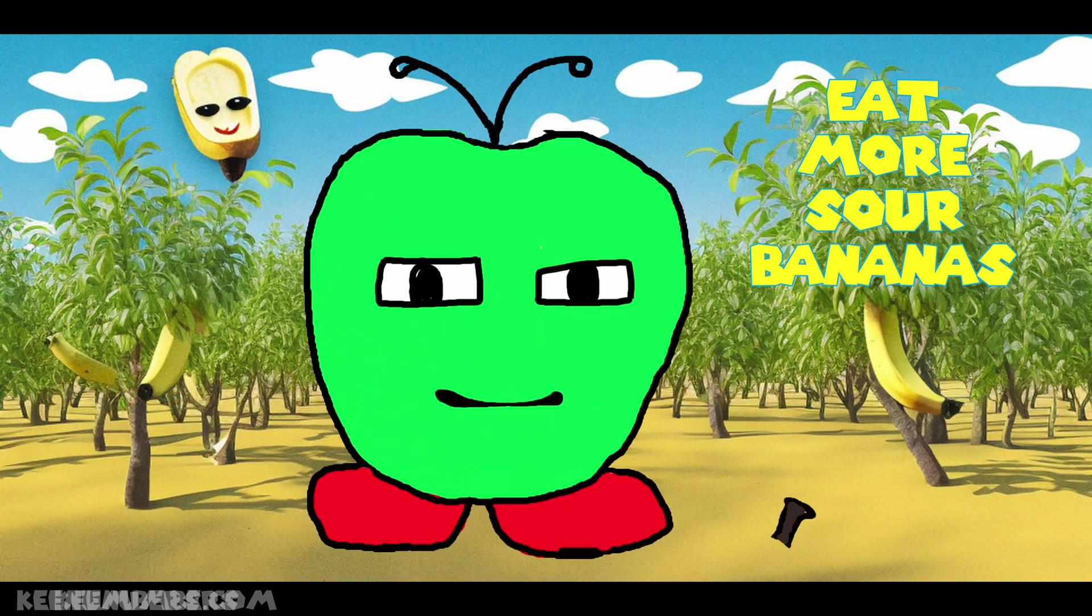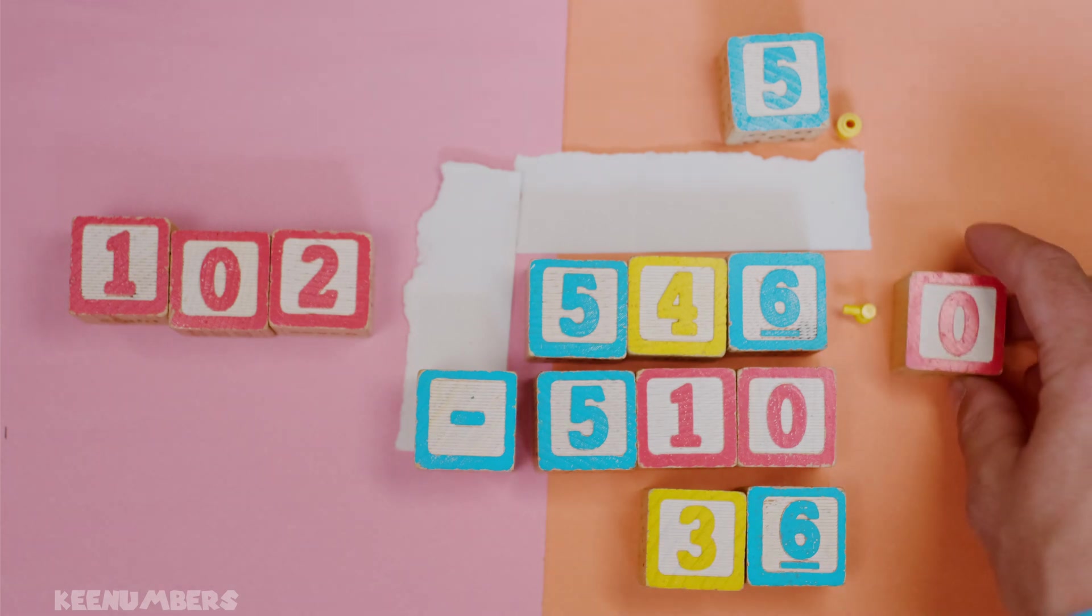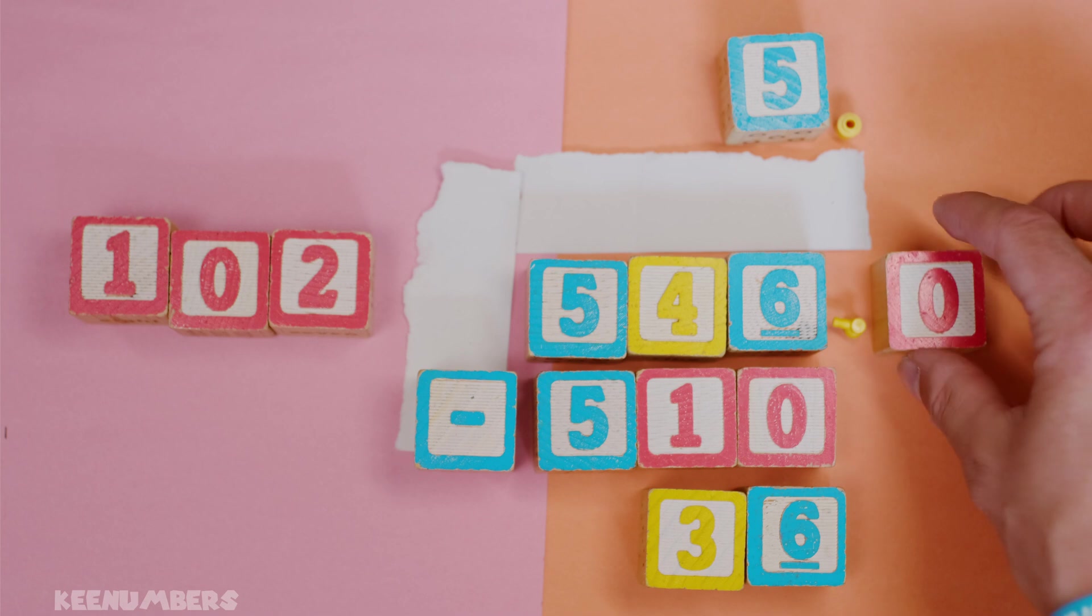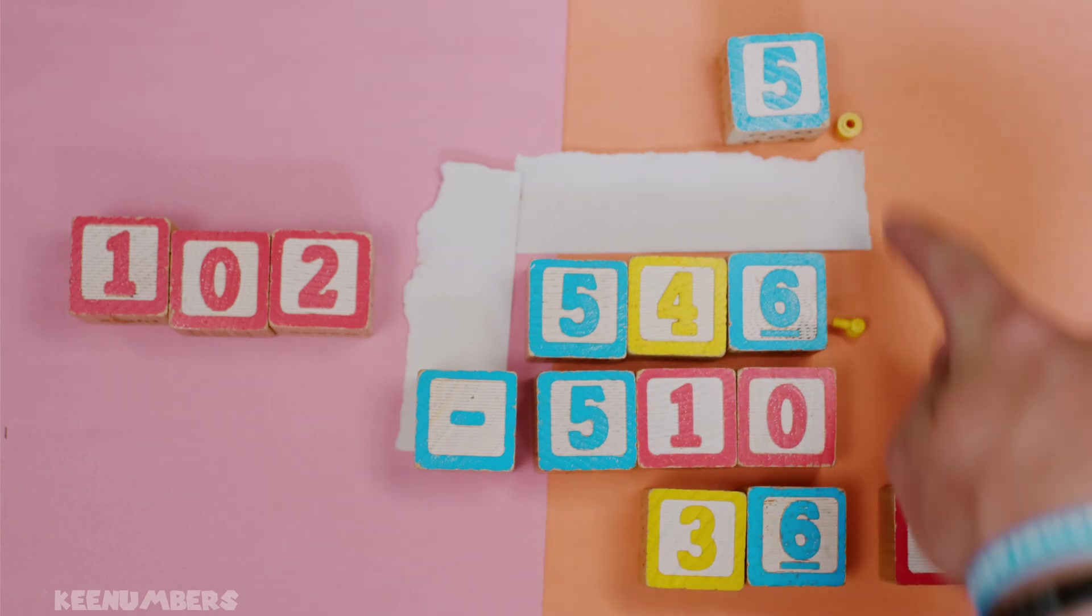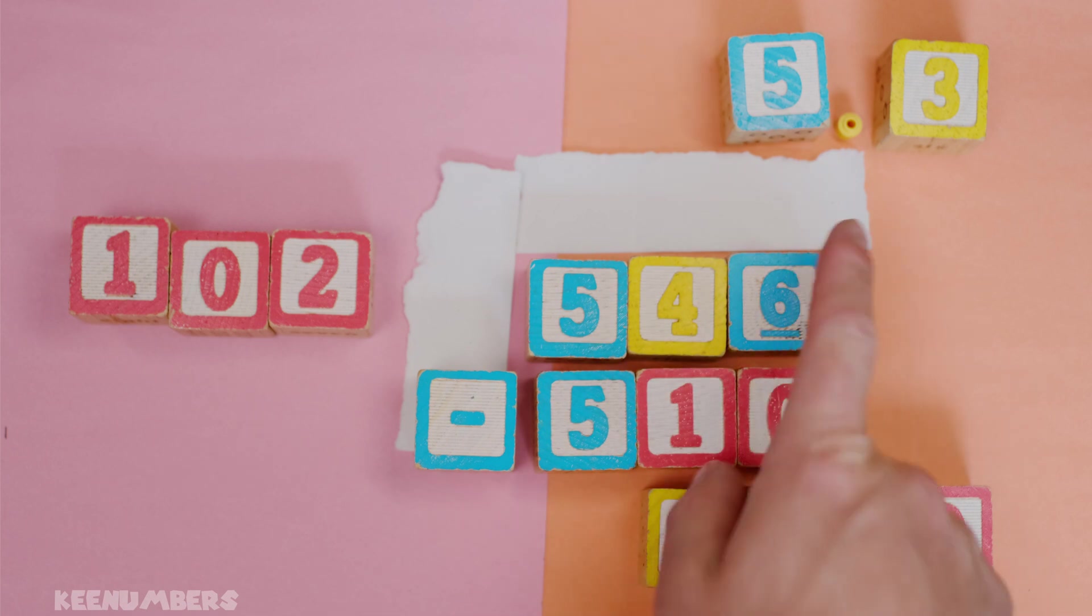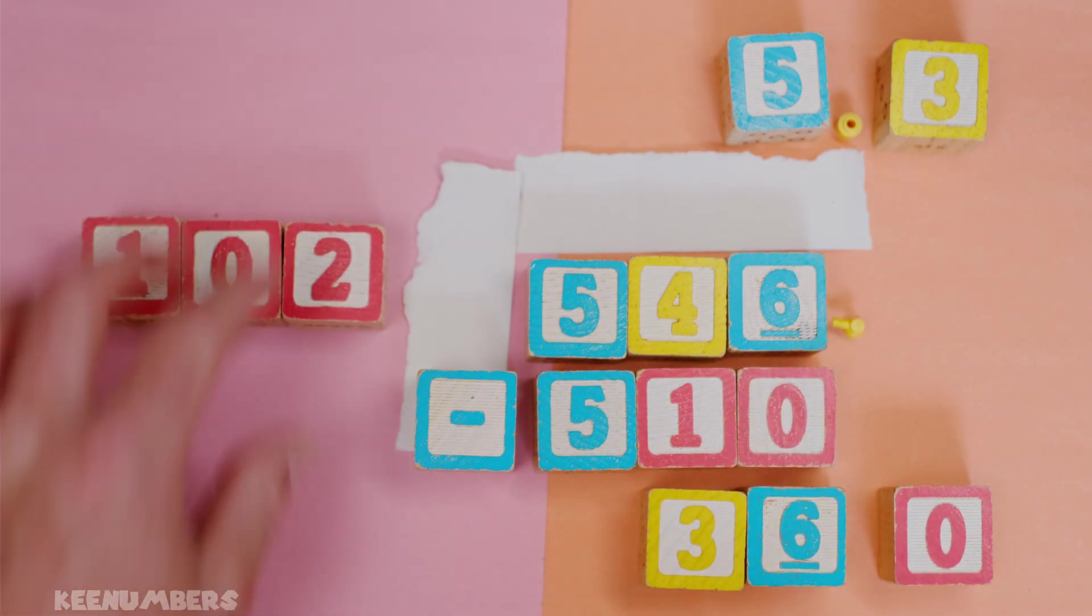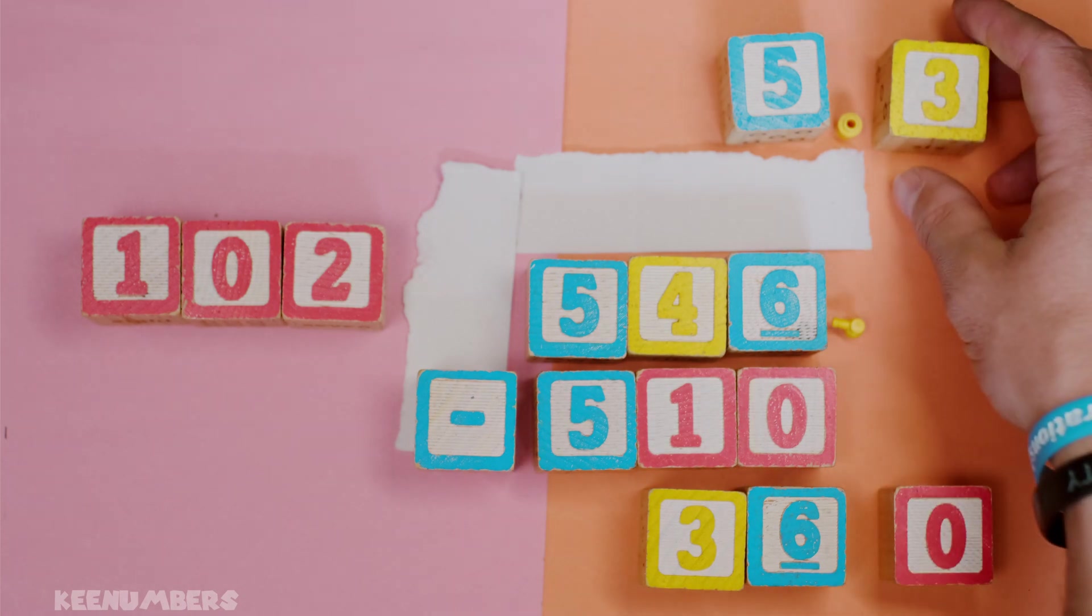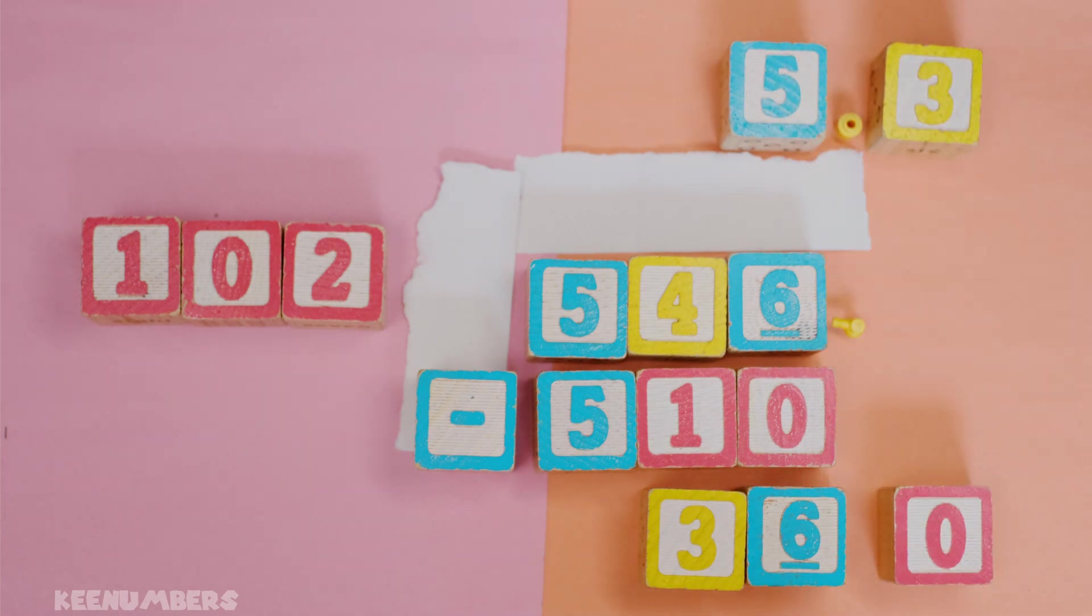Bring down a zero here because this is 546.0. Keep those decimals lined up - that's so important. 102 goes into 360 how many times? It goes in three times. Three times 102 gives you 306. We could stop here and say it's about 5.3, though we might have to round up. Shall we continue the division? Let's continue.